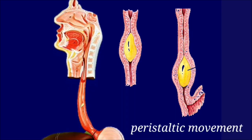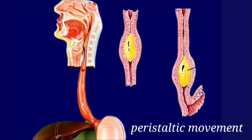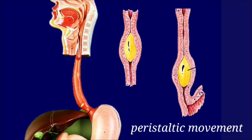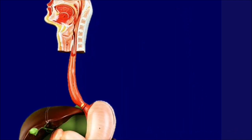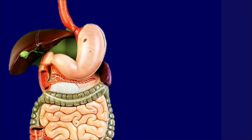The food always travels through the alimentary canal by peristaltic movement, which is generated by the contraction of muscles in the alimentary canal wall. The food then enters the stomach through the sphincter, and the churning movement of the stomach grinds the food properly.